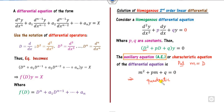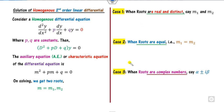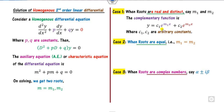Once you solve the auxiliary equation, you get two roots m1 and m2. Based on the nature of these roots — they may be real or complex — we consider three cases: when the roots are real and distinct, when the roots are real and equal, and when the roots are complex numbers.